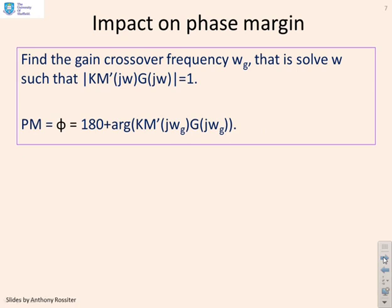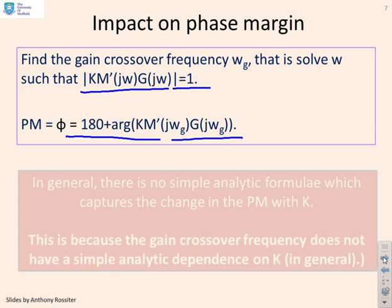To define the gain crossover frequency, we're solving: k · |M'(jω_g) · G(jω_g)| = 1. And we define the phase margin using the formula: PM = 180° + arg[M'·G evaluated at ω_g].